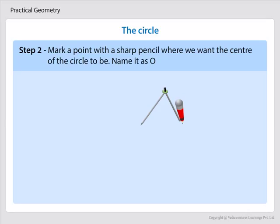Step 2. Mark a point with a sharp pencil where we want the center of the circle to be. Name it as O.